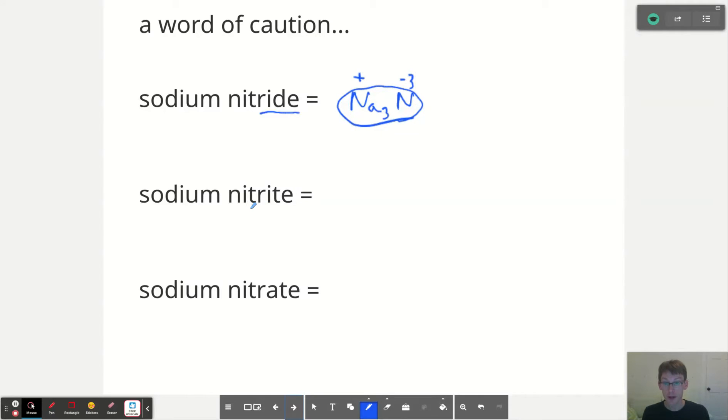But if I see sodium nitrite, well, nitrite is different. It's Na NO2. My NO2 is negative one. My Na is positive one. And there's my formula NaNO2. So sodium nitrite, with a T here instead of the D, it's almost the same name. It's a very different formula.